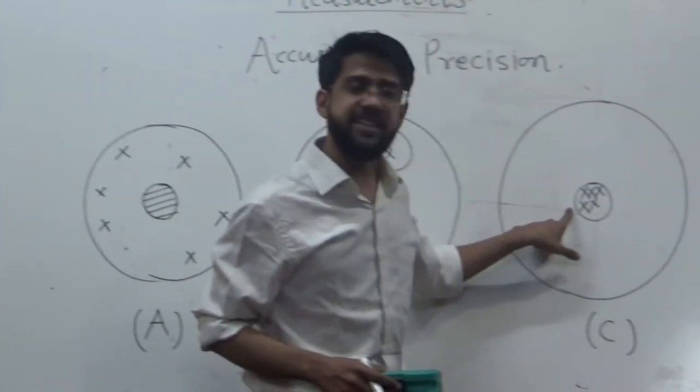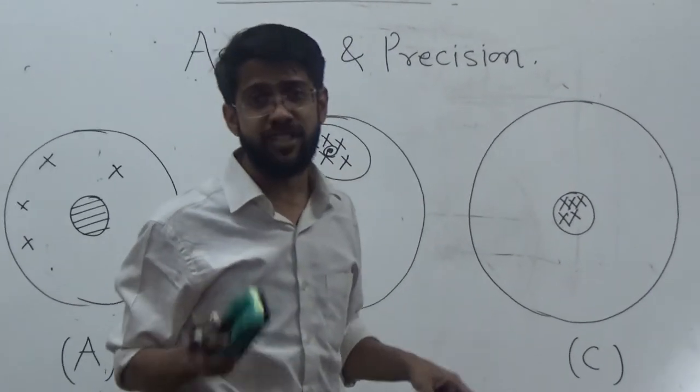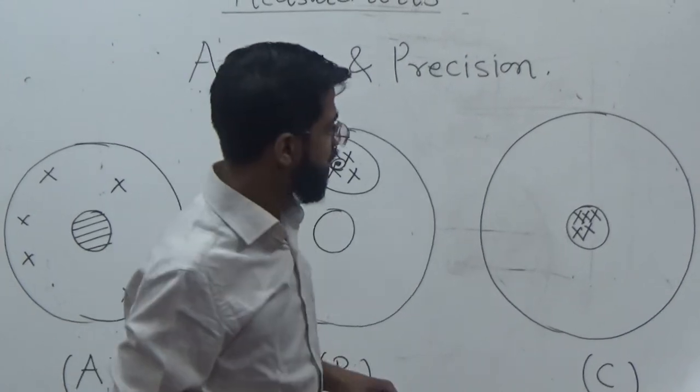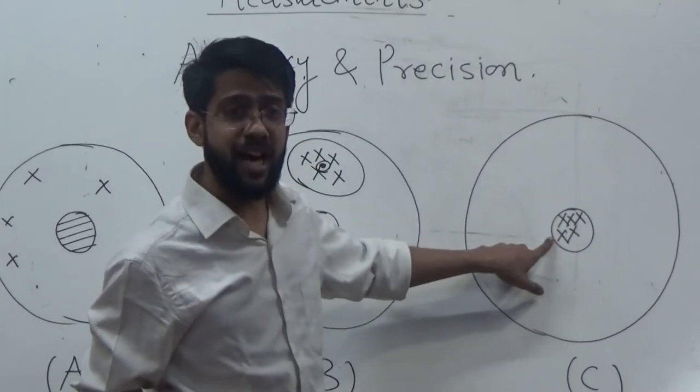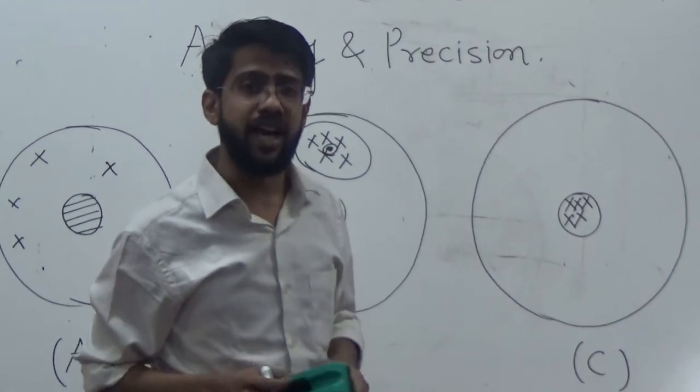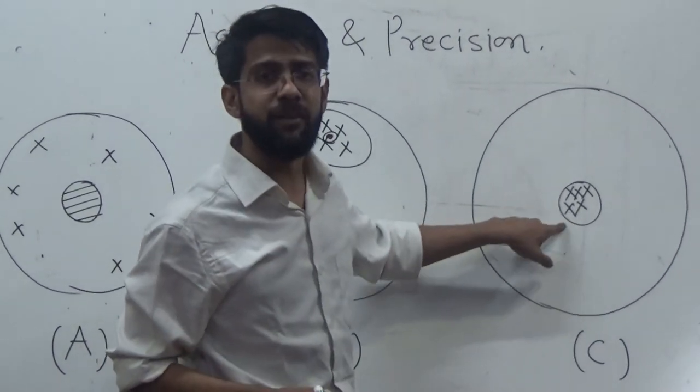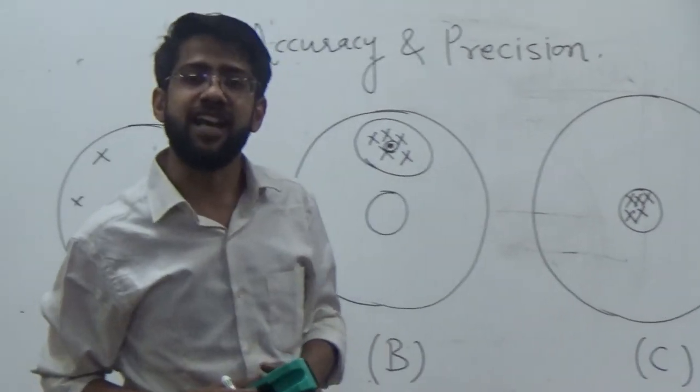Now in this example, this is the ideal case. We would always choose this player to play on our team. This player has hit all the darts in the middle, which is an ideal case that doesn't happen every time. The player has hit all the readings in the middle, who is accurate as well as precise.